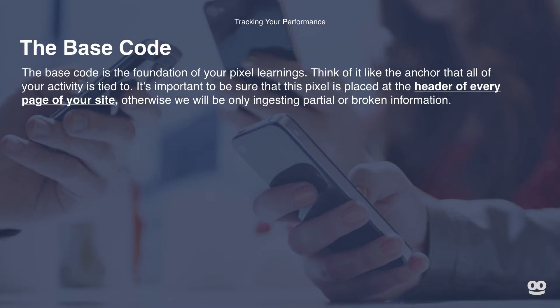Now let's set this up. The first thing you want to look at is the base code. The base code is the foundation of all your pixel learnings — think of it like an anchor that all your activity is tied to. It's important to be sure that this pixel is placed at the header of every page of your site. Otherwise, we will only be ingesting partial or broken information. So please ensure you add the base code to every page on your site. To get started, navigate back to the conversion page and click on Create Pixel.